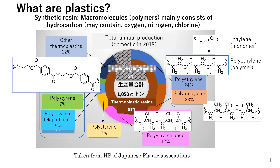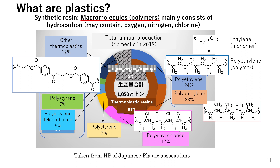Let's talk about plastics. Regarding plastics, they can also be referred to as synthetic resins. Resins originate from tree sap, and the solidification of pine resin results in a composition similar to plastics. Plastics are primarily composed of carbon and hydrogen, but they can also contain elements like oxygen, nitrogen, and chlorine. These are polymers, meaning they consist of large molecules. They are formed by the bonding of numerous atoms, so they are also referred to as polymers.